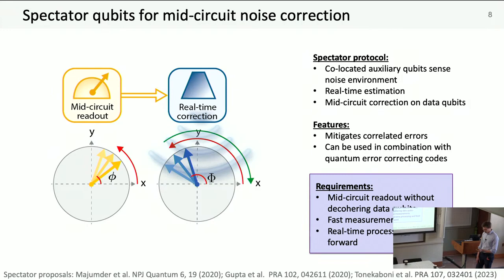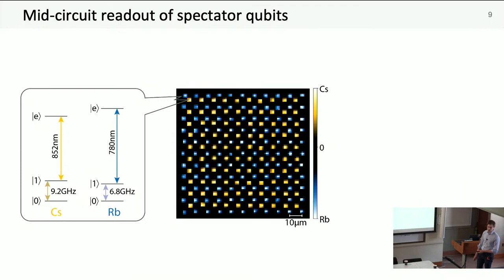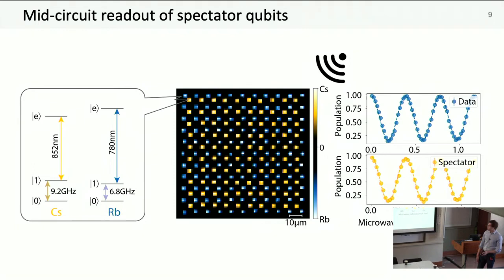We set out to do this in our platform. We encode quantum states in the hyperfine clock states of rubidium and cesium respectively, each with their own unique microwave frequency and unique optical imaging frequencies. The experiment was done on this array: 221 sites, 100 of which are cesium atoms and 121 data qubits are rubidium atoms.